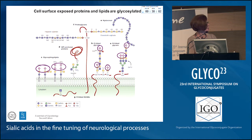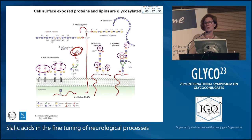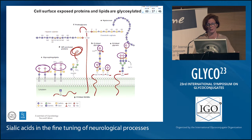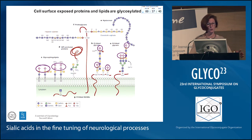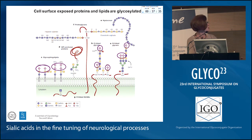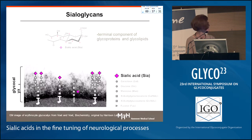We have glycoproteins, but we also have in similar — and in some tissues even larger — amounts other glycan carriers, which are lipids: so glycolipids must of course be acknowledged in this context. These scaffolds can be glycosylated in a very complex manner, and I am focusing on the terminal sugars, which is the sialic acid.